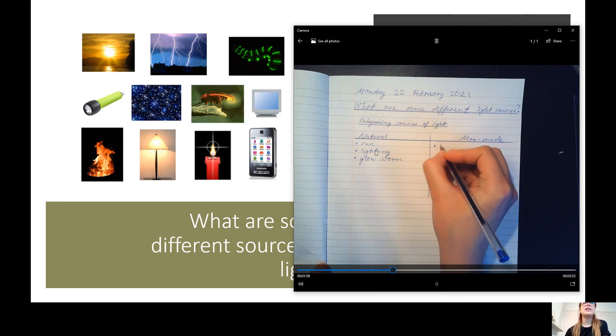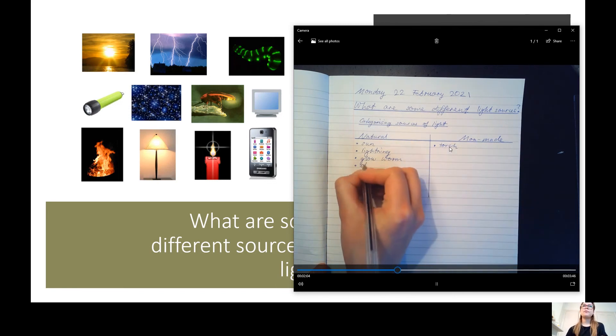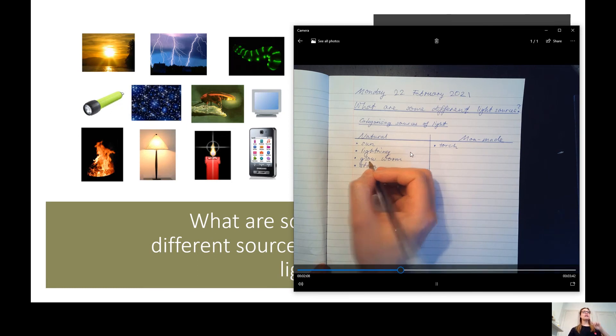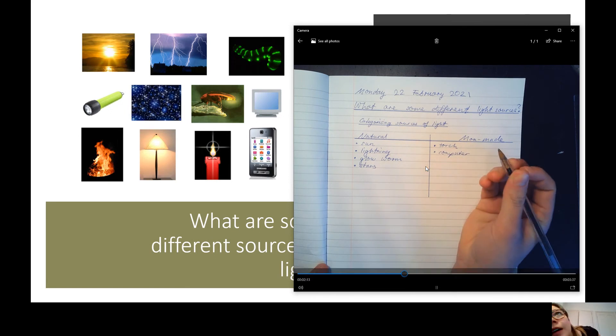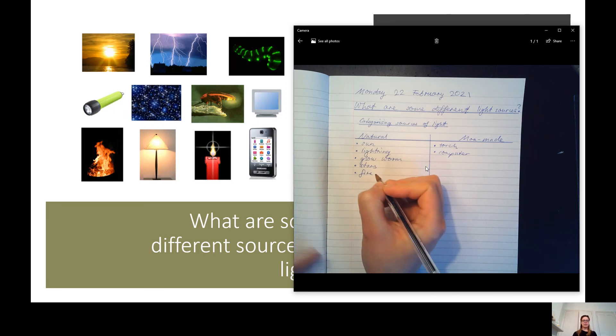A torch, batteries, is man-made. Stars are natural. Then a computer. Computer is man-made because it requires electricity. Fires can occur naturally. Lamps are made by humans.